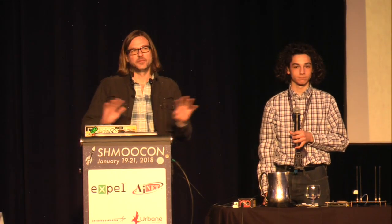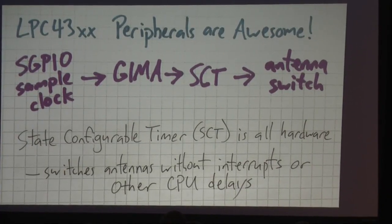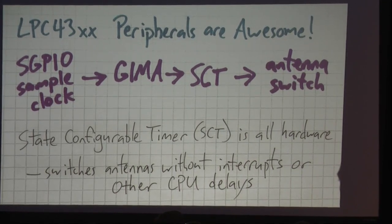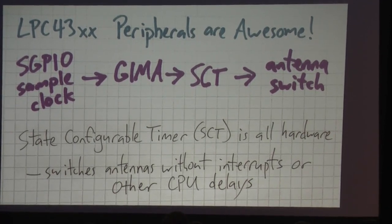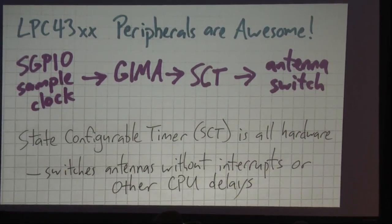We're going to talk a lot about phase of radio signals, and by having the same cable length from the radio receiver all the way to each antenna, we eliminate phase differences from different cable lengths. The LPC-4300 microcontroller has some amazing peripherals. In the normal HackRF firmware, there's a peripheral called the SGPIO, responsible for reading samples from the ADC. We configure one of its unused pins to output the sample clock internally, then route it through a multiplexer array — that's the GEMA — to the SC timer, or state configurable timer. That then drives the switches on the Opera Cake to cycle through the antennas.